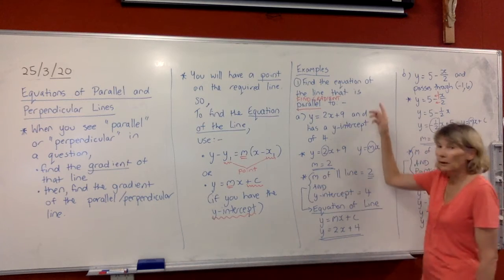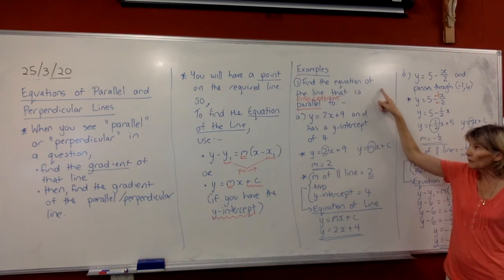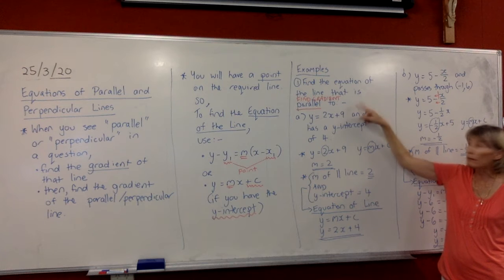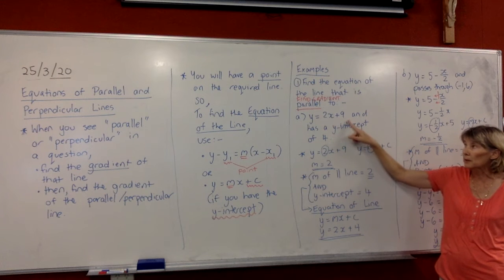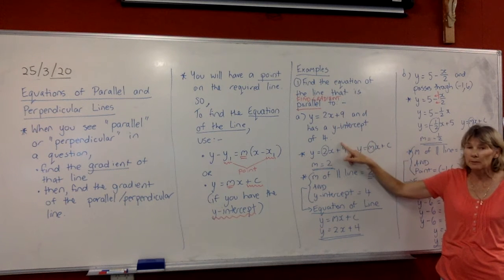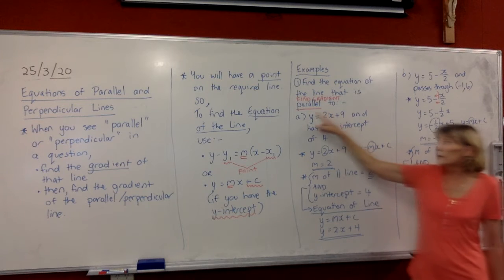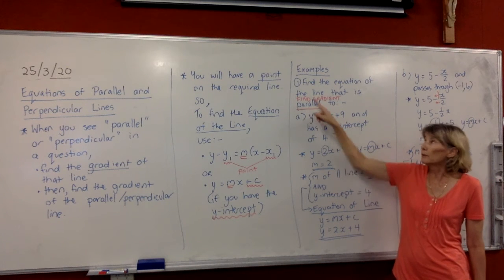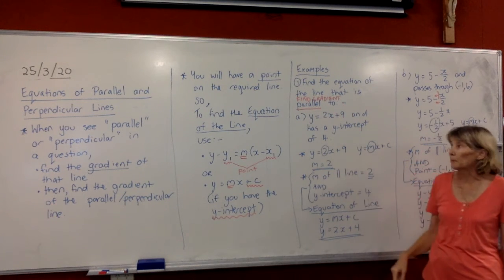Okay, so we're going through this example here. It says find the equation of the line that is parallel to y equals 2x plus 9 and has a y-intercept of 4. So when you see the word parallel, just underline it in red, write find gradient up there.